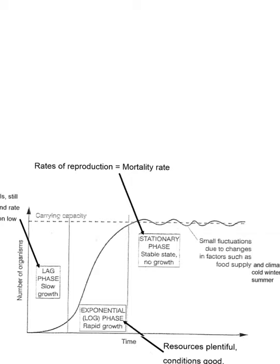Further population growth is prevented by external constraints. During this time, the population size fluctuates but overall its size remains relatively stable. Birth rates and death rates are approximately equal. You'll have slight increases and decreases, which can be accounted for by fluctuations in limiting factors such as the presence of predators, disease, climate, etc.